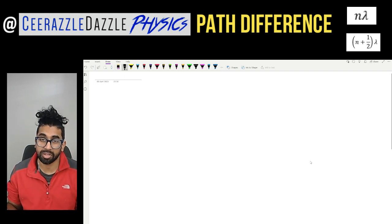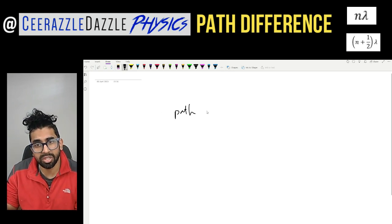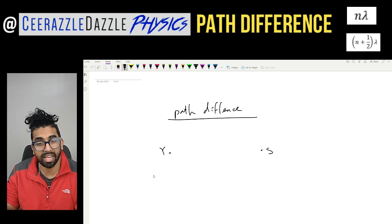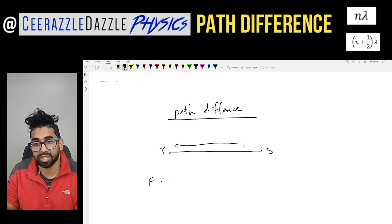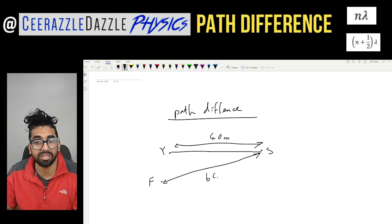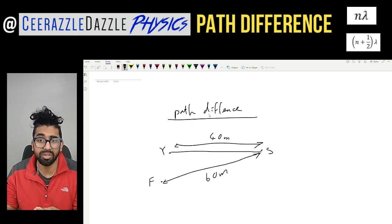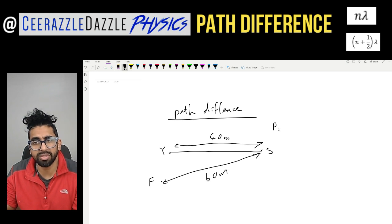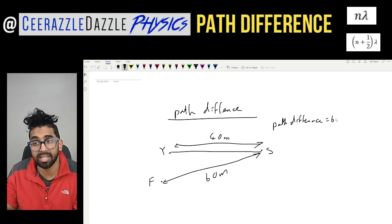Let's talk about the concept of path difference. What does the word 'path difference' actually mean? Let's say this is you over here, school is over here, and this is your friend F. You're going to travel 40 meters to school, and your friend's distance is 60 meters. If I ask you what is the path difference — the difference in their paths — it would simply be 60 minus 40, so the path difference is 20 meters.